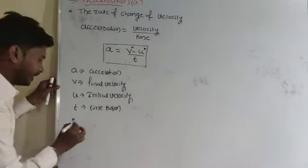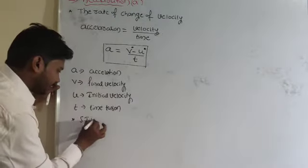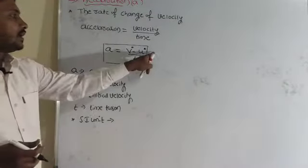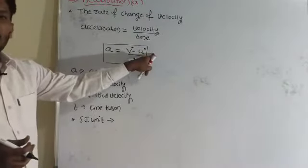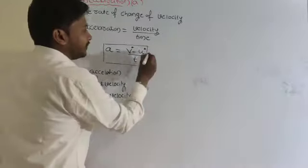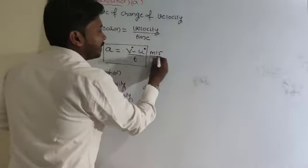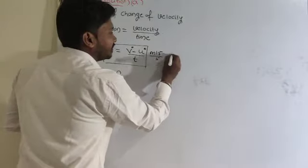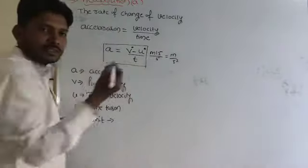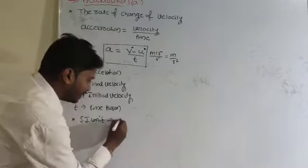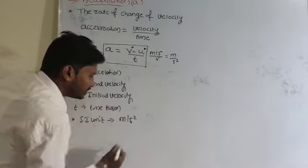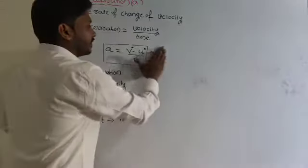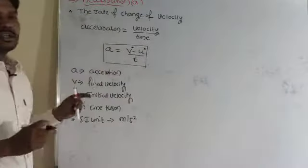What is the SI unit for acceleration? In the numerator, velocity is there. The SI unit for velocity is meter per second. In the denominator, one more second term is there, so we get meter per second squared. Therefore, the SI unit for acceleration is meter per second square.